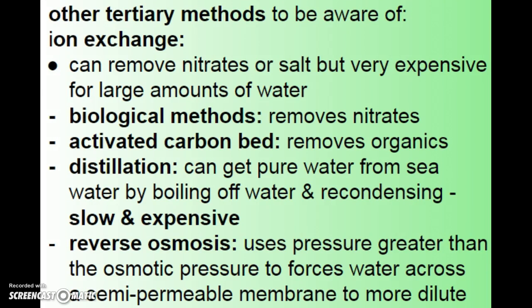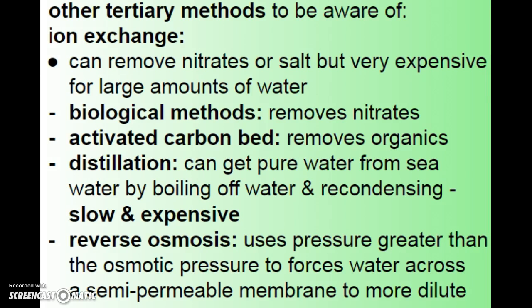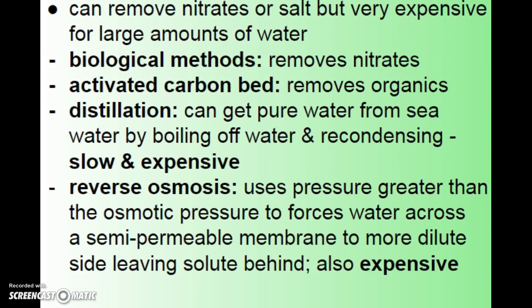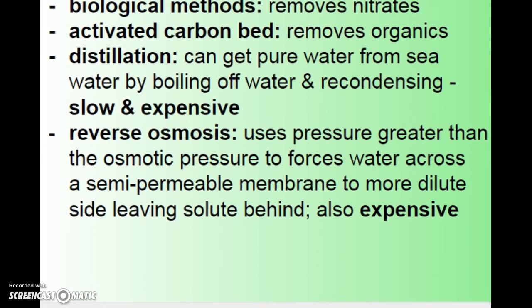Other tertiary methods include ion exchange instead of precipitation to remove nitrates or salt, though it's more expensive. Biological methods can also be used to remove nitrates, and an activated carbon bed — like those in fish tank filters — can help remove organics. Distillation produces very pure water but is slow and expensive, making it impractical for large city water systems. Reverse osmosis, used by many homeowners, applies pressure greater than osmotic pressure — normally osmosis flows from lower solute concentration to higher, but reversing that process yields even purer water, leaving solutes behind.